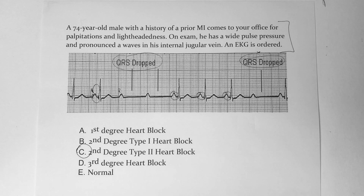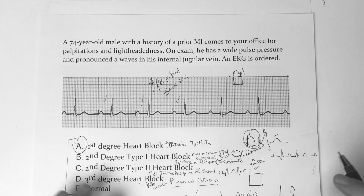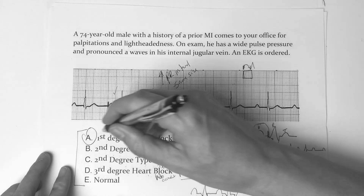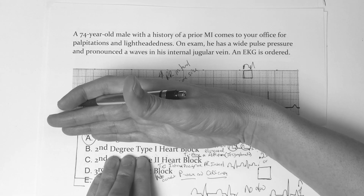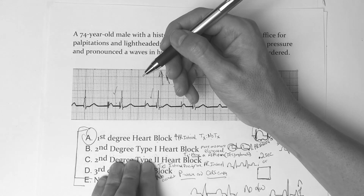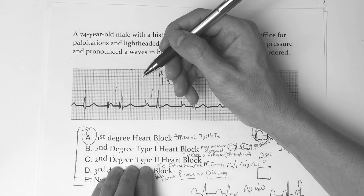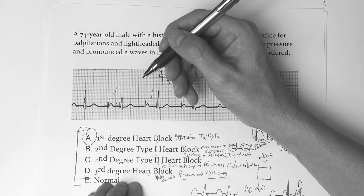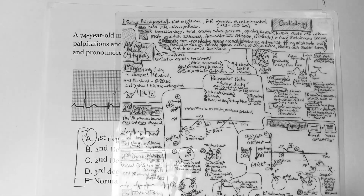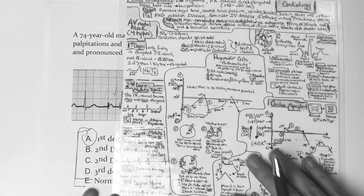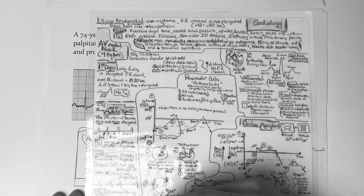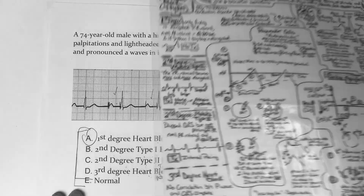There are only four AV blocks you need to figure out. If you stick to the flow and approach the EKG by looking at your answer choices, knowing the definition of each block, and working backwards — just look at the PR intervals: is it the same size? Is it getting prolonged? Normal size with a dropped beat? Or is there no association at all? Follow that flow chart and you have a good chance at getting these right. We're doing the AV blocks now and eventually we'll get to pacemakers, myocytes, and related topics. Hope it was helpful.